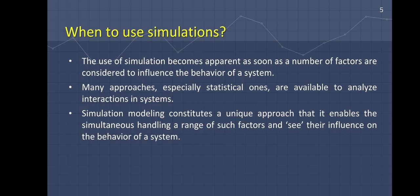So when do we use a simulation? The use of simulation becomes apparent as soon as a number of factors are considered to influence the behavior of a system. Many approaches, especially statistical ones, are available to analyze interactions in systems. Simulation modeling constitutes a unique approach in that it enables the simultaneous handling of a range of such factors and seeing their influence on the behavior of a system.